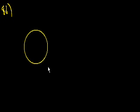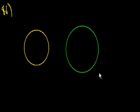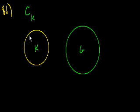Problem 86. The length of the edging that surrounds circular garden K is 1/2 the length of the edging that surrounds circular garden G. So we have circular garden K and circular garden G. The circumference of K is equal to 1/2 the circumference of G. What is the area of garden K? Assume that the edging has negligible width.